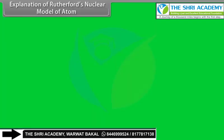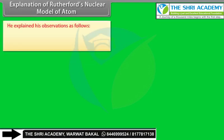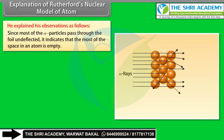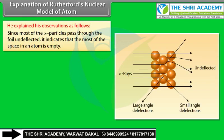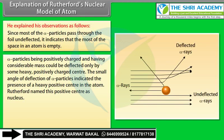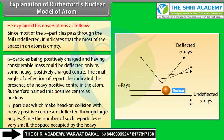Rutherford explained his observations as follows: (1) Since most alpha particles pass through undeflected, most of the space in an atom is empty. (2) Alpha particles being positively charged could only be deflected by a heavy positively charged center — small deflections indicated the presence of this heavy positive center, which Rutherford named the nucleus. (3) The very small number of large-angle deflections means the space occupied by the heavy positive center is very small.